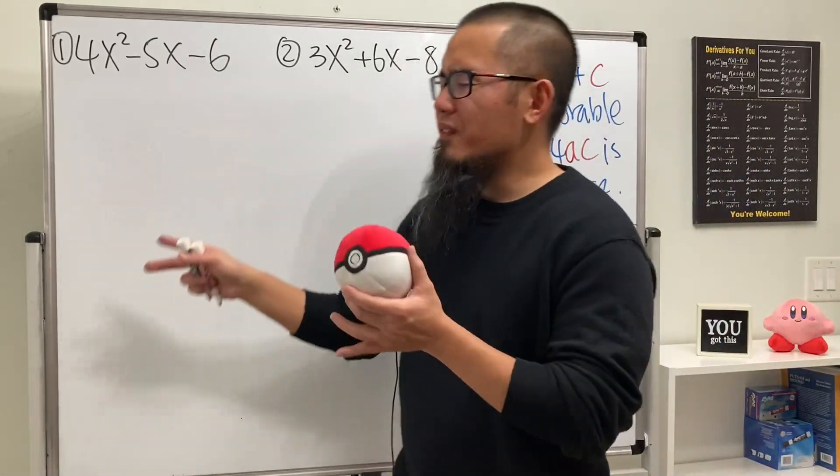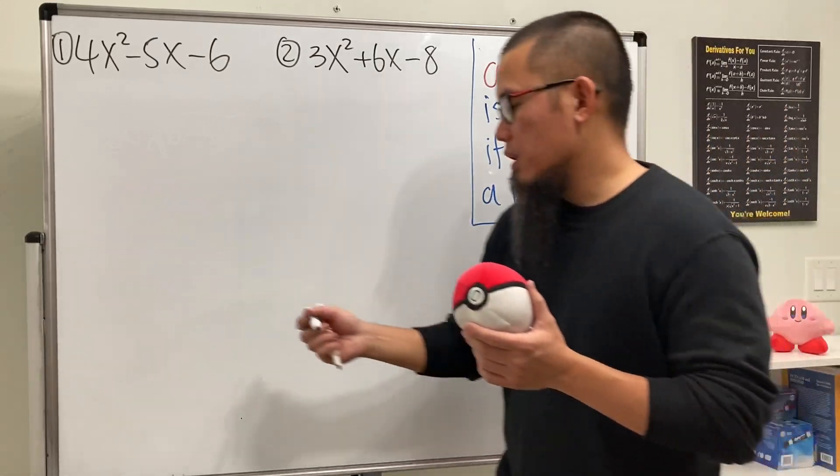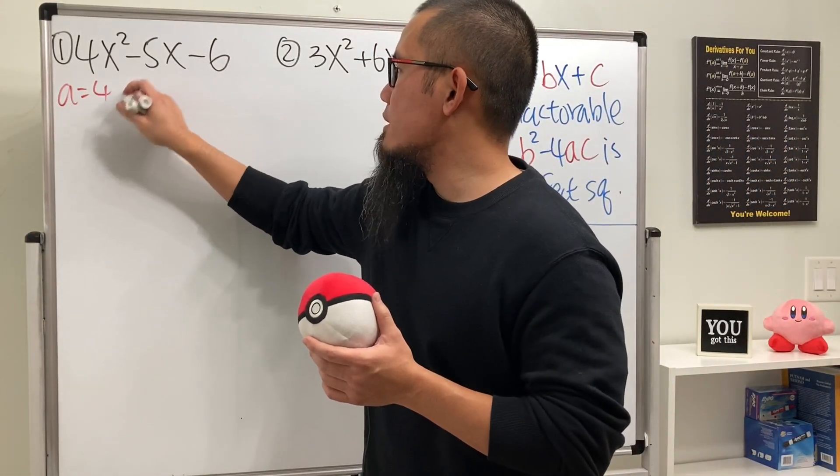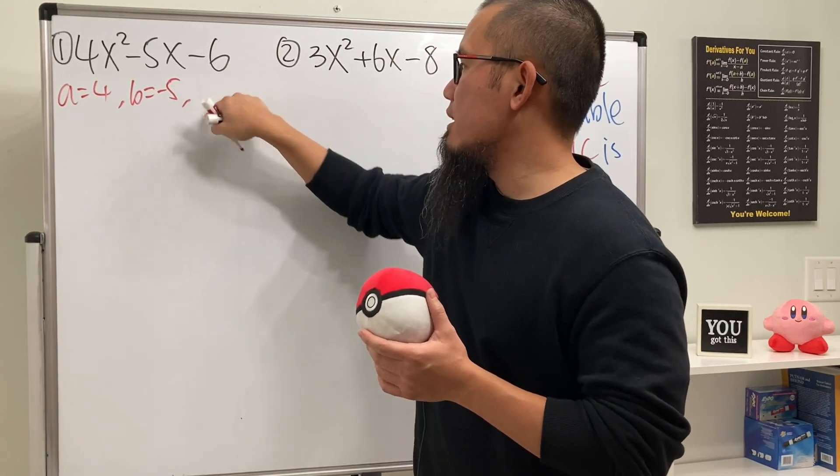So before I even try to factor it, maybe let me just work it out right here first. Right here we know a is equal to 4, and b is equal to this, which is negative 5, and c is equal to negative 6.